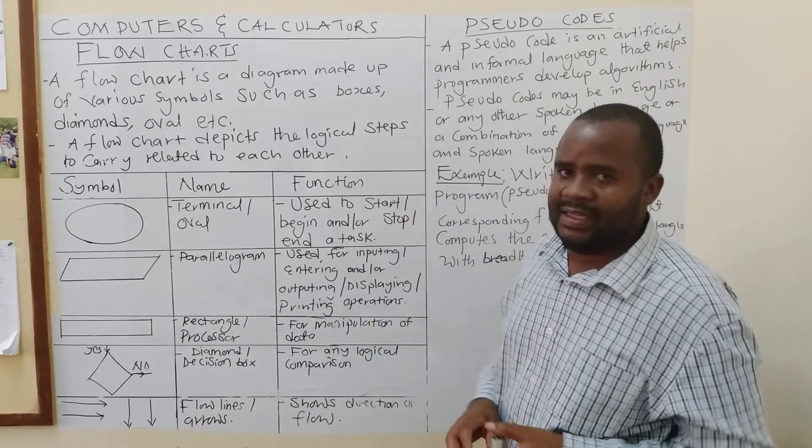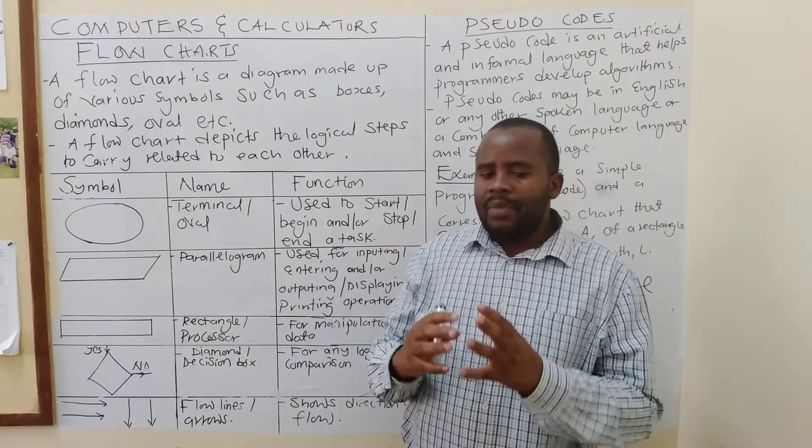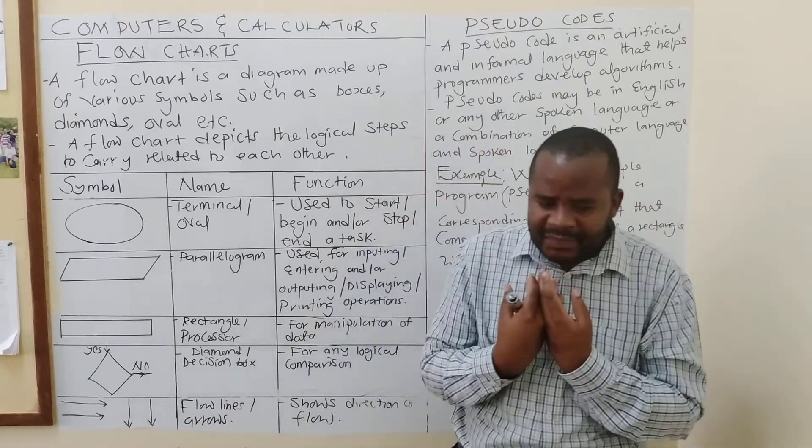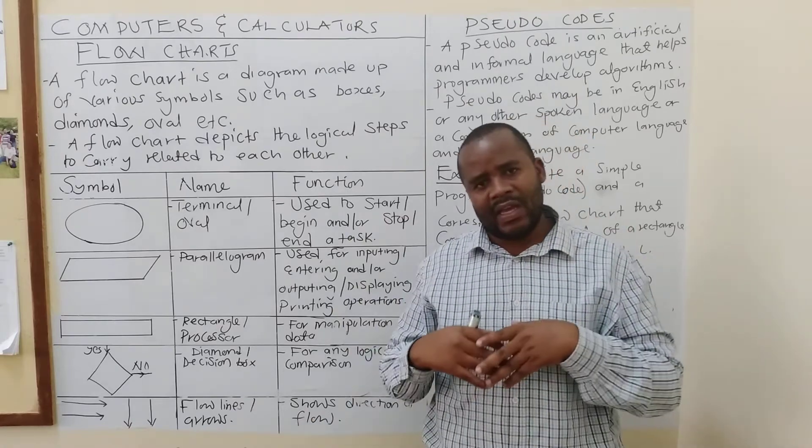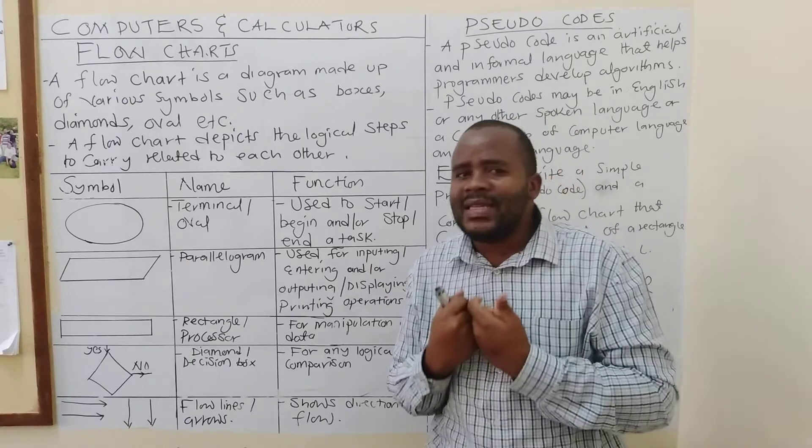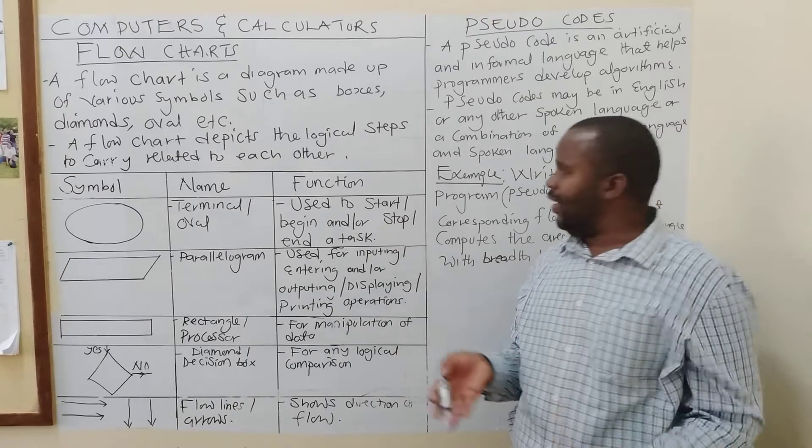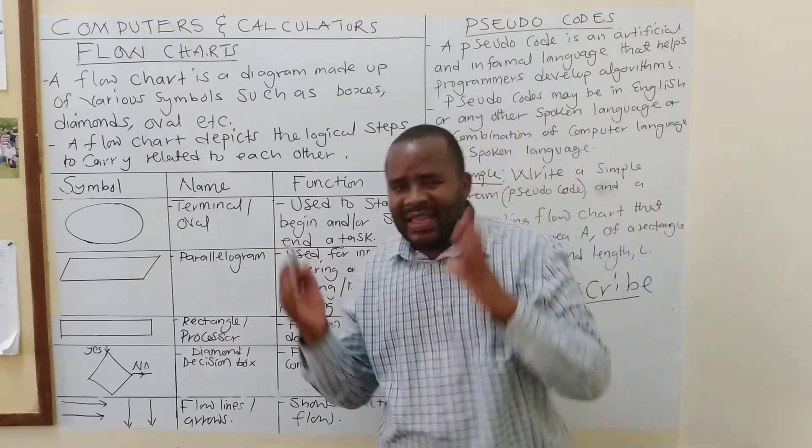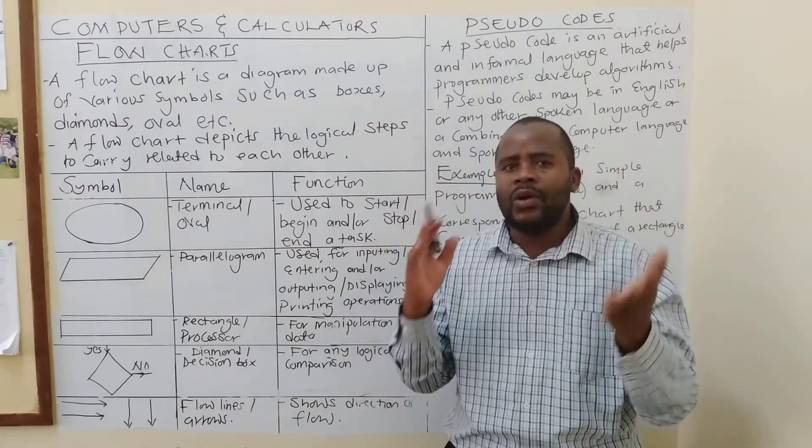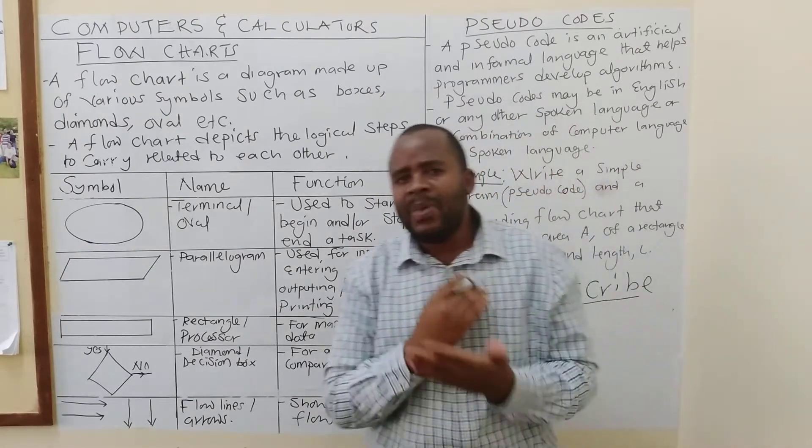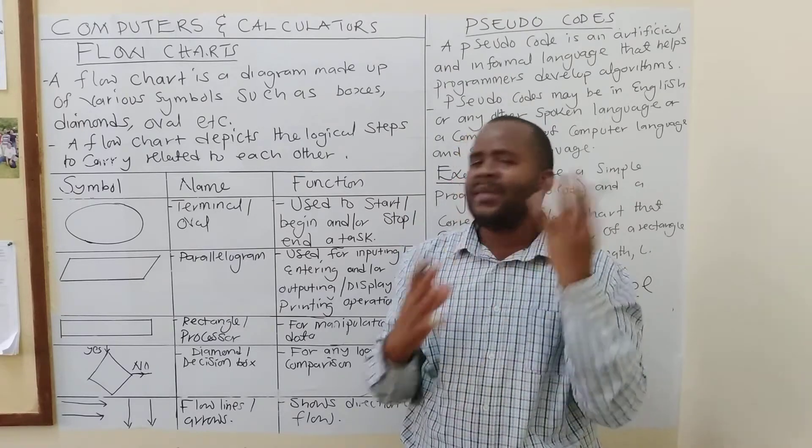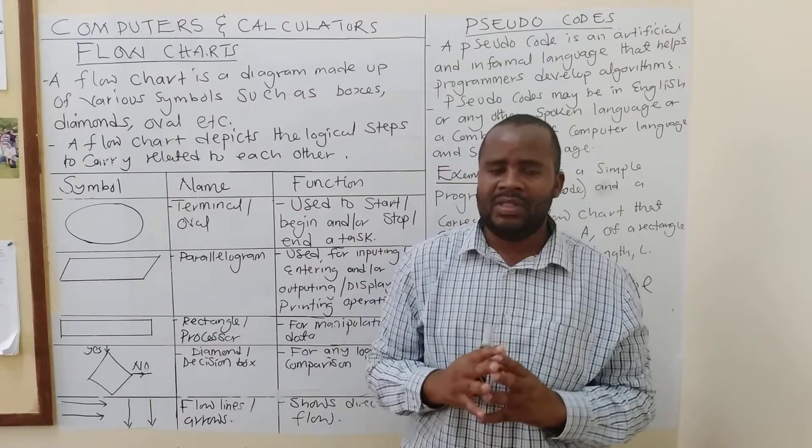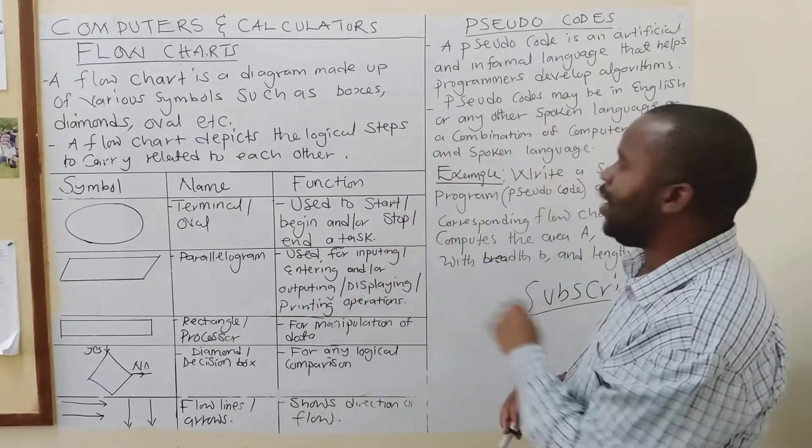So, we want to see how we can use these flowcharts and pseudocode to solve mathematical problems. Now, again, I must mention to you, dear colleagues, that for you to be able to use these two concepts correctly, effectively, and efficiently, you need to have a solid understanding of mathematical formulae. Because, that is what is expected of you to do. In most cases, we ask you to say, can you design or can you draw a flowchart that could be used to define the area of a right-angled triangle?